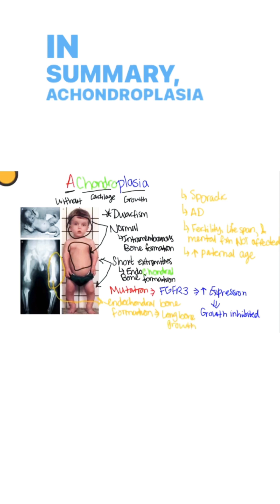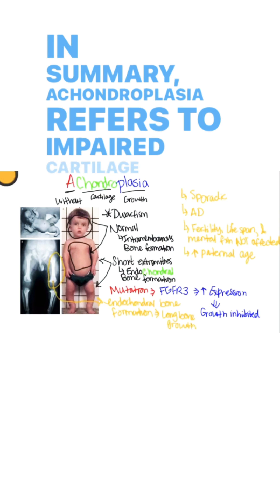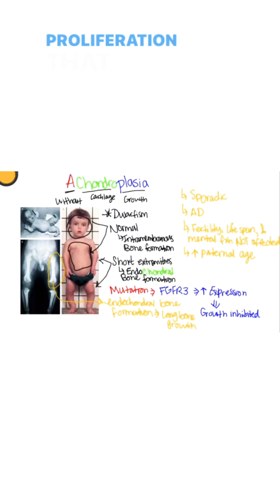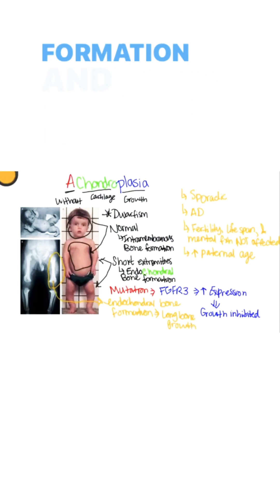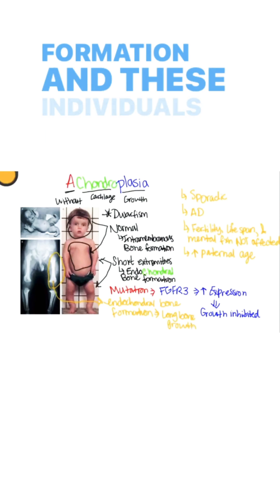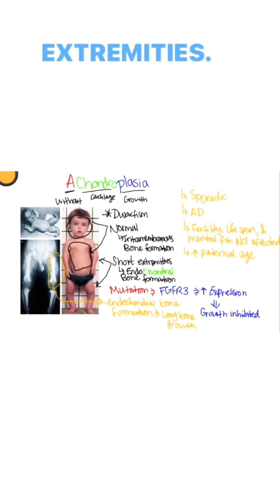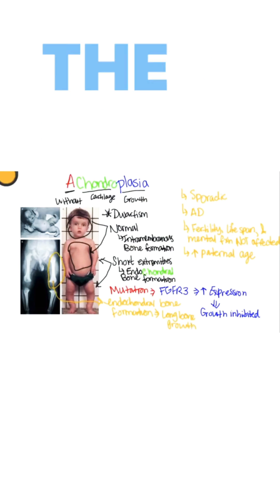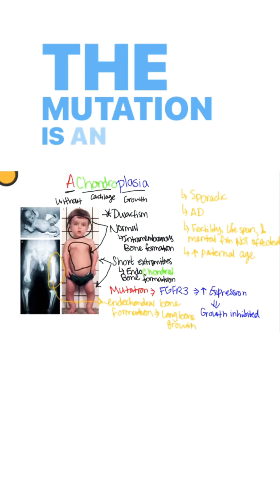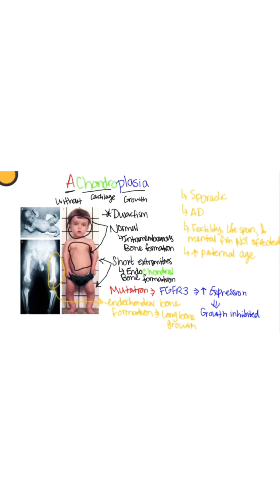In summary, achondroplasia refers to impaired cartilage proliferation that inhibits growth plate and long bone formation. These individuals end up with short extremities. However, their head and trunk are normal, and the mutation involves overexpression of FGFR3.